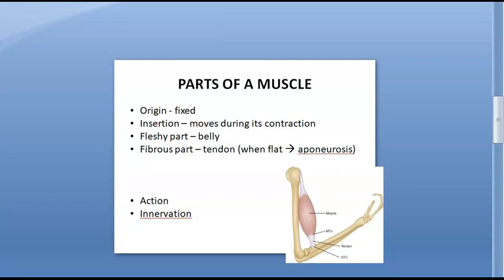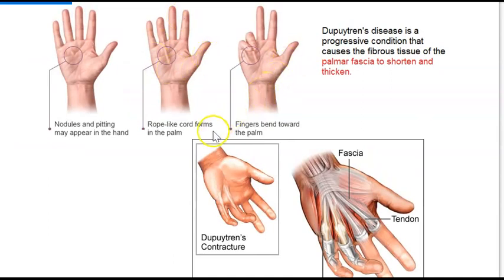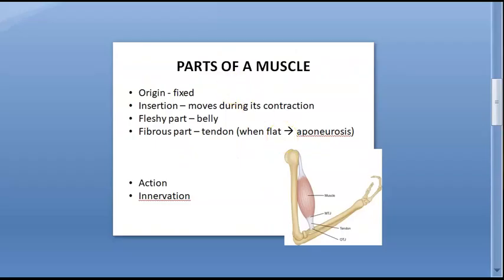An example is the palmar aponeurosis — the palmaris longus tendon is flat, forming the palmar aponeurosis, which you can feel in your palm. The clinical importance: thickening of the palmar aponeurosis leads to Dupuytren's contracture, where the two medial fingers — the little finger and ring finger — become bent and cannot straighten.